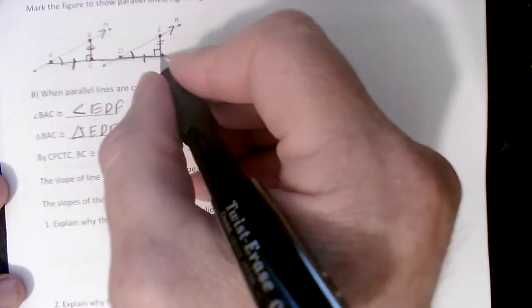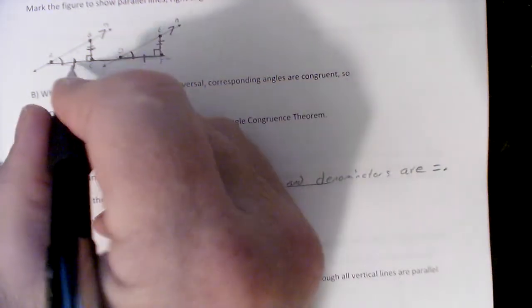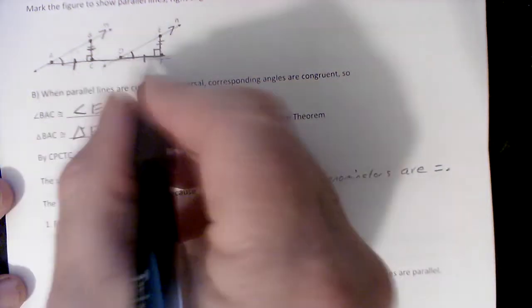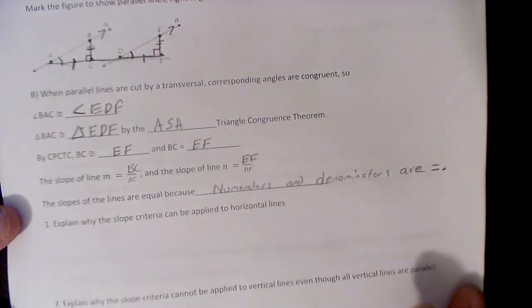So remember, a rise is a change in the Y, going up and down. We need it on the 90 degree. I'm going to prove that. A run is a change in the horizontal, the X value.